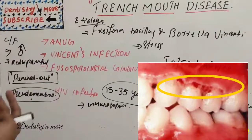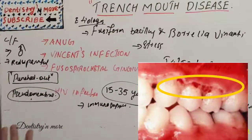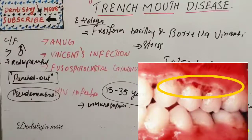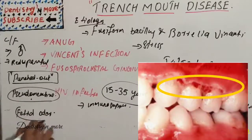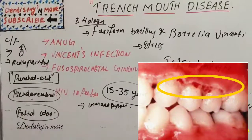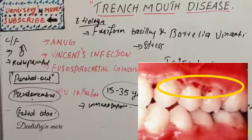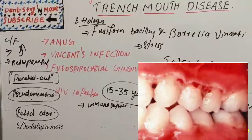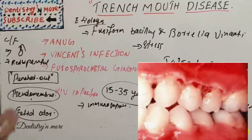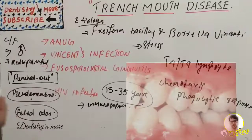The pseudomembrane has a pronounced bleeding tendency and always produces an extremely unpleasant fetid odor. These are all characteristic features of trench mouth disease. Rarely, the gingival involvement may extend to the mucosal surfaces of the soft palate and tonsils.